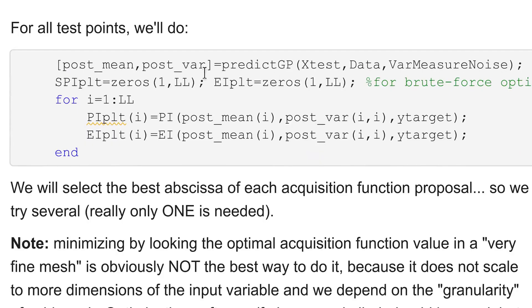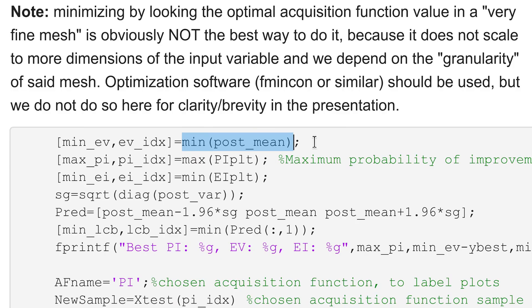And I will also have a posterior mean and posterior variance. Then the point I should sample according to expected value will be the one with the best posterior mean, the minimum in this case, or the one with maximum probability of improving, or the one with best expected improvement.